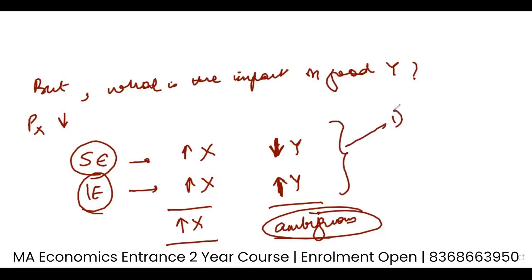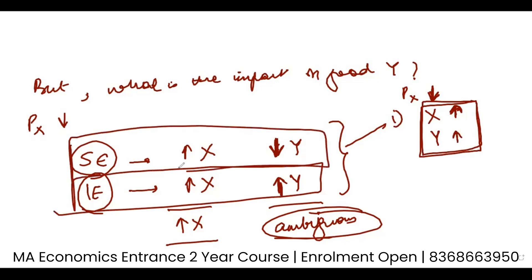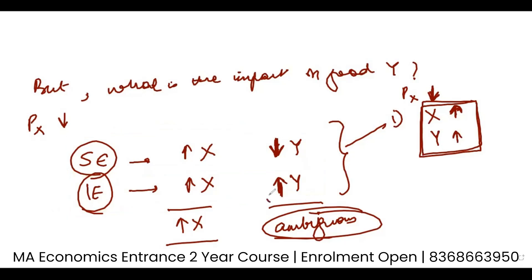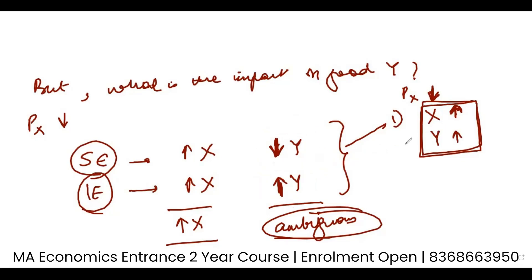In the first scenario, when the price of good X decreases, I not only increase the consumption of good X, but I also increase the consumption of good Y. This means the income effect would have been more prominent — higher than the substitution effect — and therefore the net effect is that good Y also increases.